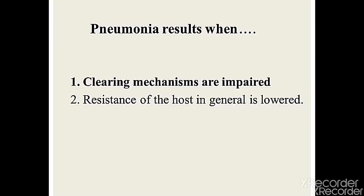Pneumonia occurs because of two reasons: clearing mechanisms are impaired, and the resistance of the host in general is lowered. Our resistance is lower if there is any comorbidity, disease, predisposing condition, or risk factor, meaning the immune response is lower, which causes pneumonia. Impaired clearing mechanisms also lead to pneumonia.